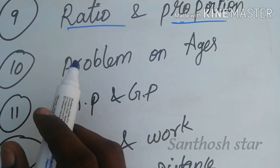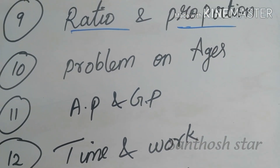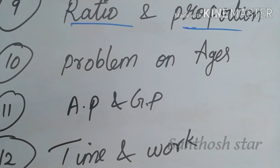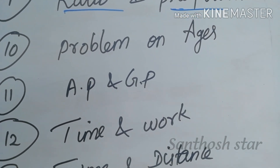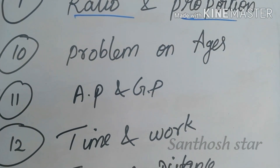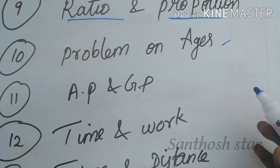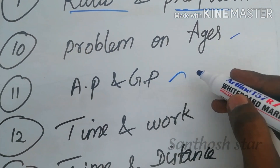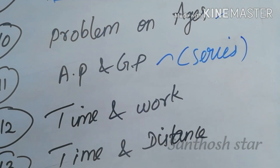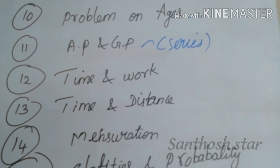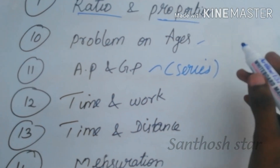This is the topic of Problems on Ages. The problem of ages is straightforward. If you have a 5-year-old, you will compute accordingly. The problem is the problem. This is the next topic: AP and GP. This is a special series.